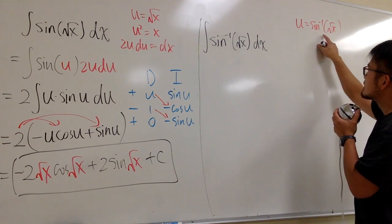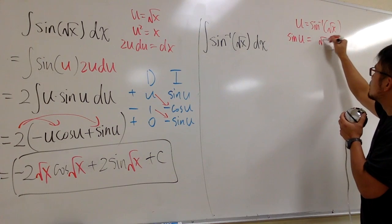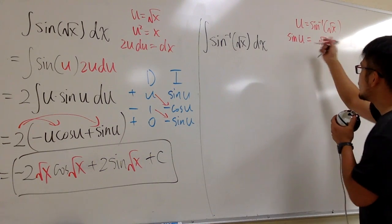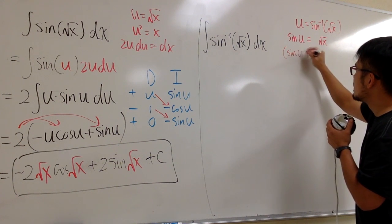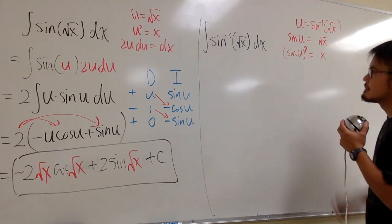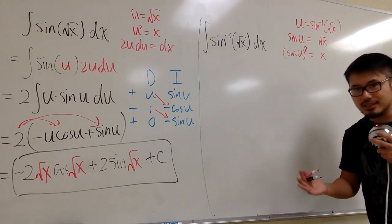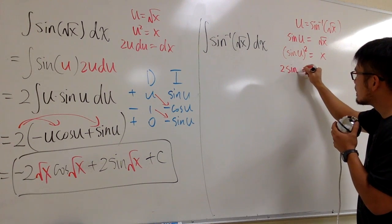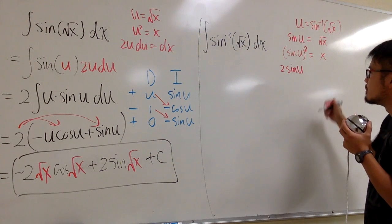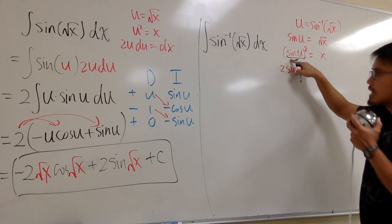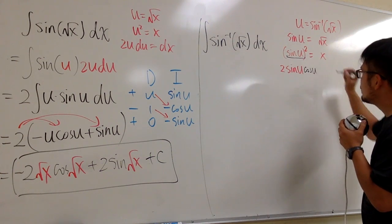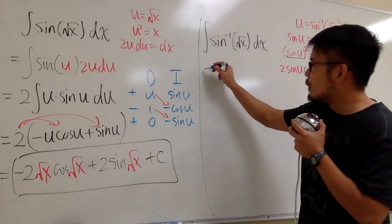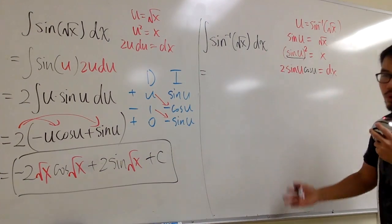I want to isolate x and then differentiate so I can get dx right away. I'm going to take the original sine on both sides: we get sine u equals the square root of x. Then I square both sides: sine squared u equals x. I take the derivative. Using the power rule first, we bring the 2 in front, the inside stays sine u, and by the chain rule the derivative of sine u is cosine u — so we multiply by cosine u. This equals dx. We are now ready to take this integral into the u world.